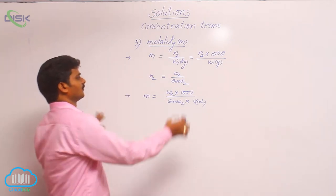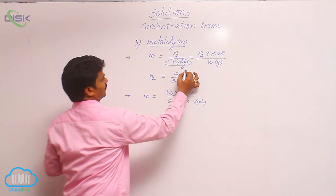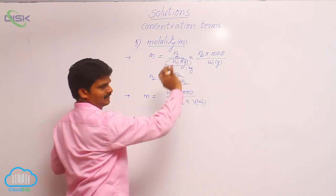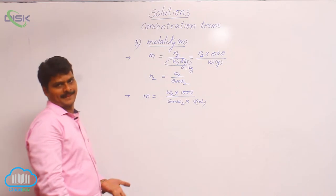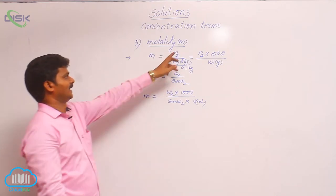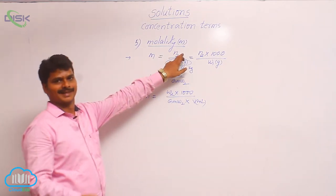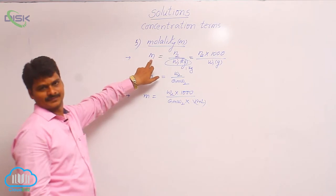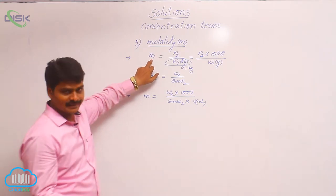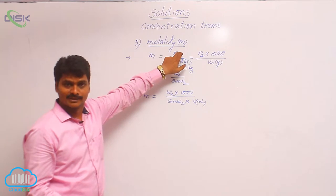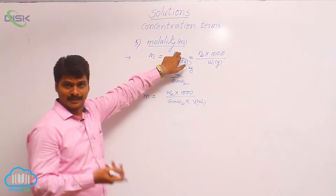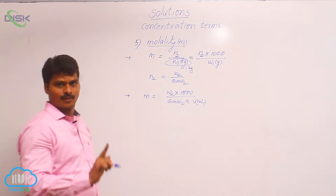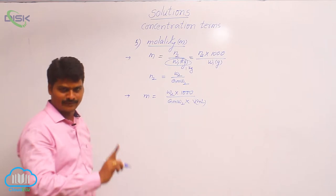From the formula, how to define molality? If W1 is equal to 1 kilogram, then the number of moles of solute is nothing but molality. So molality is defined as the number of moles of solute present in 1 kg of solvent — not solution, but 1 kg of solvent.